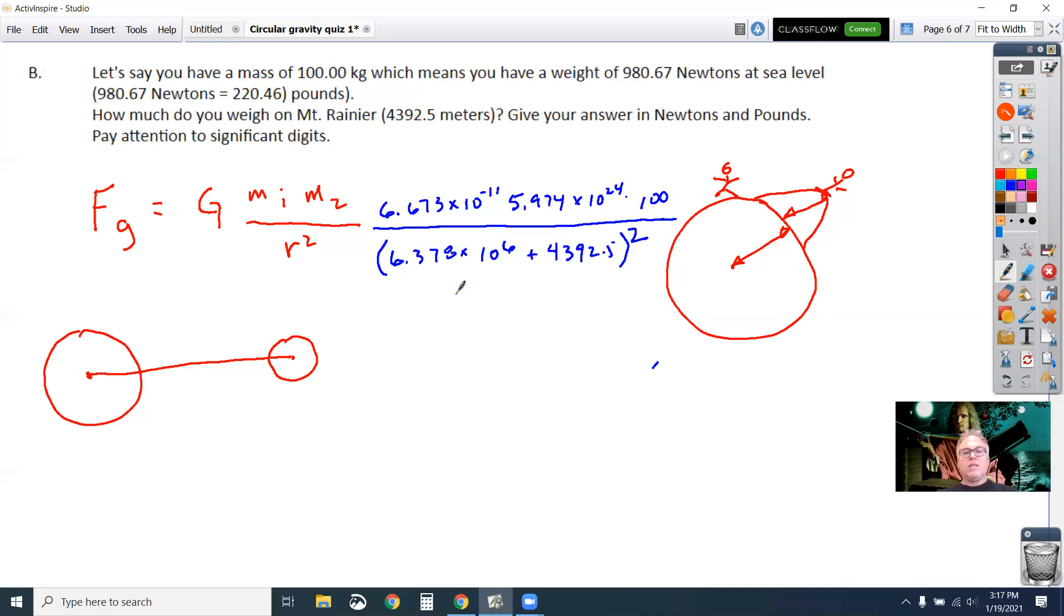And so just do what I tell you and do it this way. So 6.673 times 10 to the minus 11 times 5.974 to the 24 equals times 100 equals divided by... See, no, I forgot to do it at the start. Okay, I'm actually going to do parentheses. 6.378 in the interest of time, since last time. 4, 3, 9, 2. I did a 25-minute thing. And, but, Joomba, there we go. And my answer, after I do all the math, is 978.6.